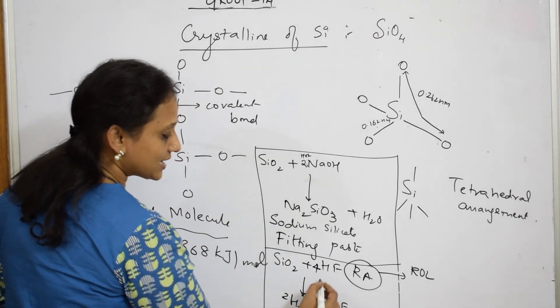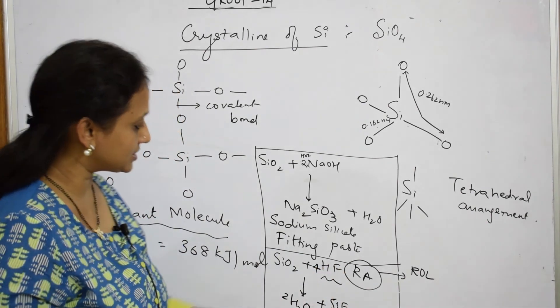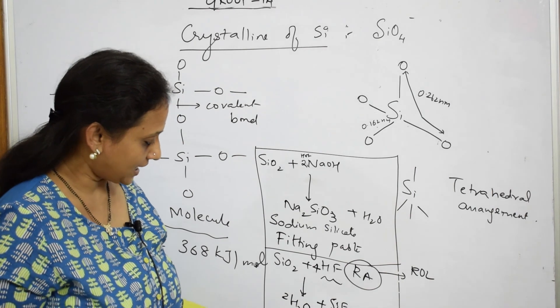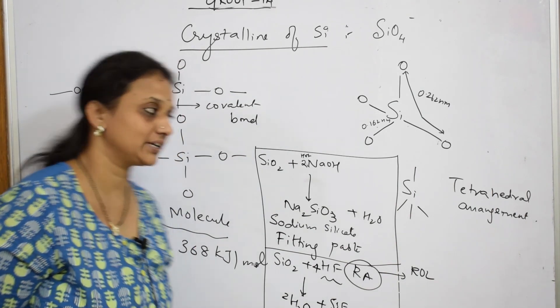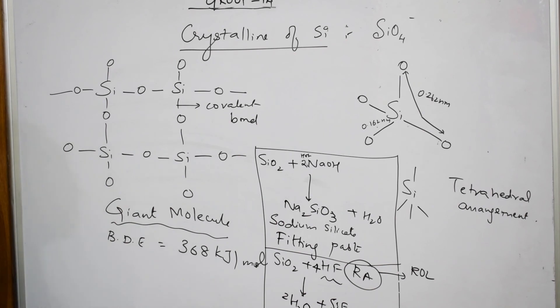So this is silicon tetrafluoride, this is called silicon tetrafluoride. It acts as a reducing agent. That is the reason it has picked up this oxygen and has come out as water and formed silicon tetrafluoride. So this is the structure of your silica.